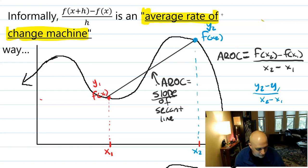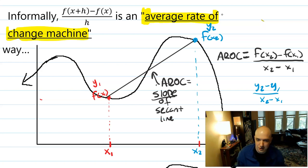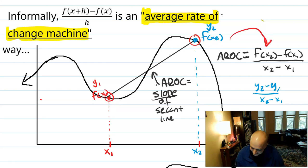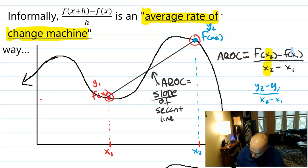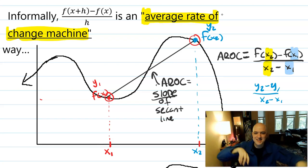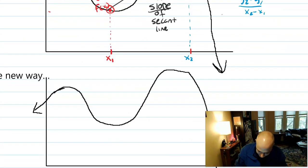In Algebra 2, you spent a lot of time computing average rates of change by hand — but every time, you had to go to the equation, read values from graphs or compute them, and plug them in. It got really tedious. Mathematicians noticed: what makes this inconvenient is having two independent x's, x1 and x2, that we have to artisanally pick every time. So they asked: could we do this more efficiently?